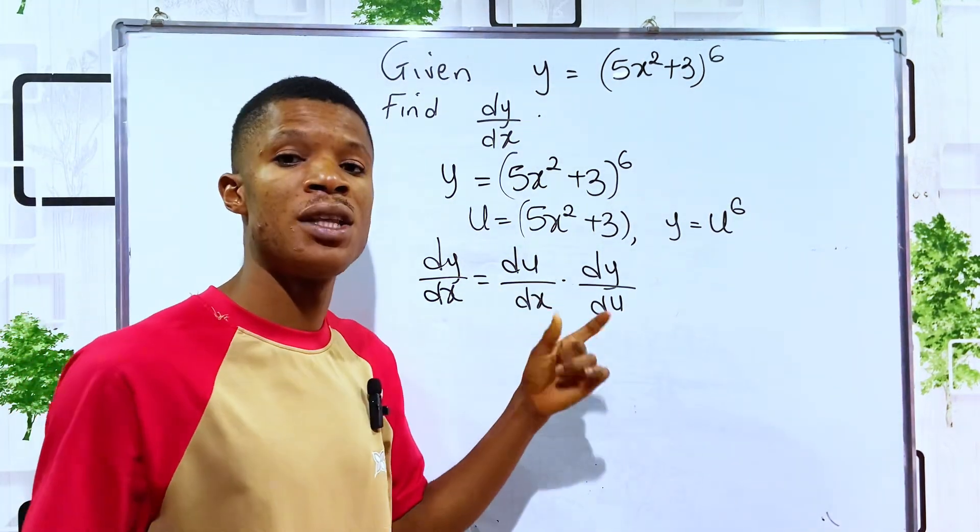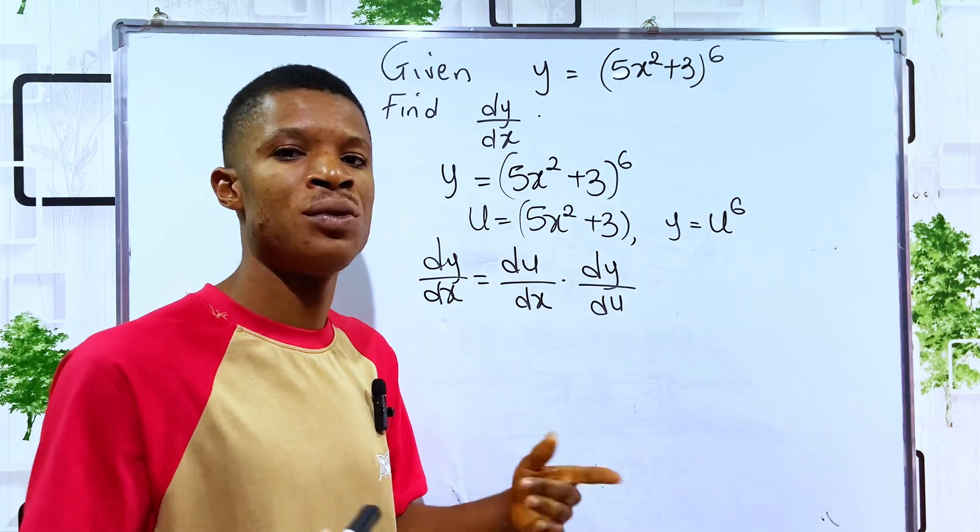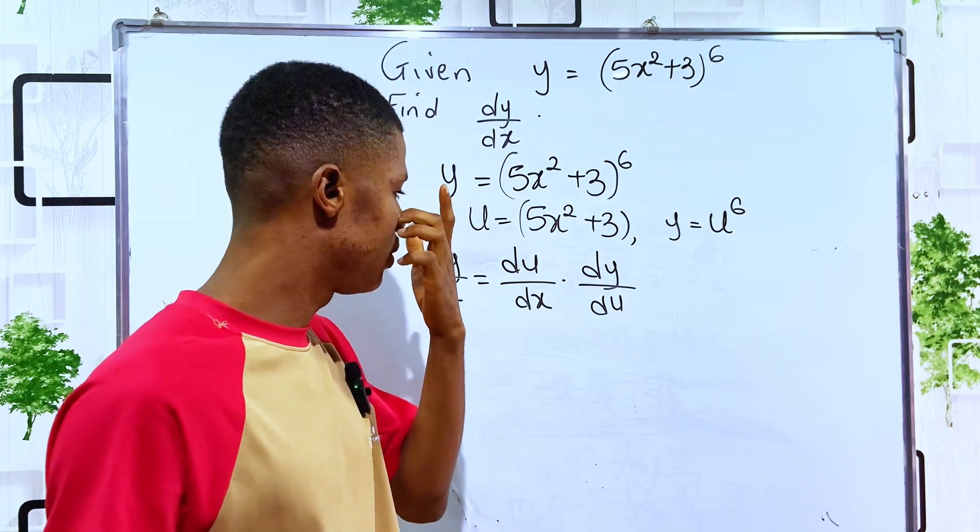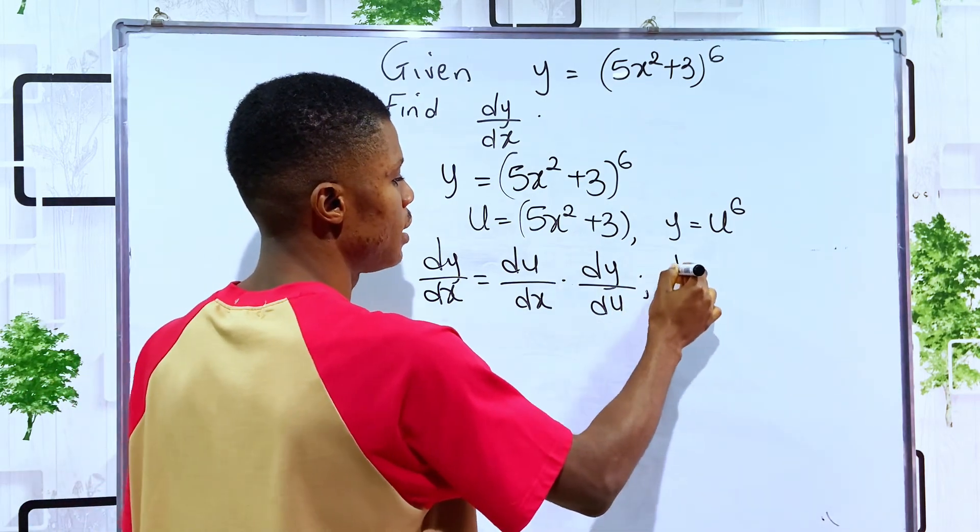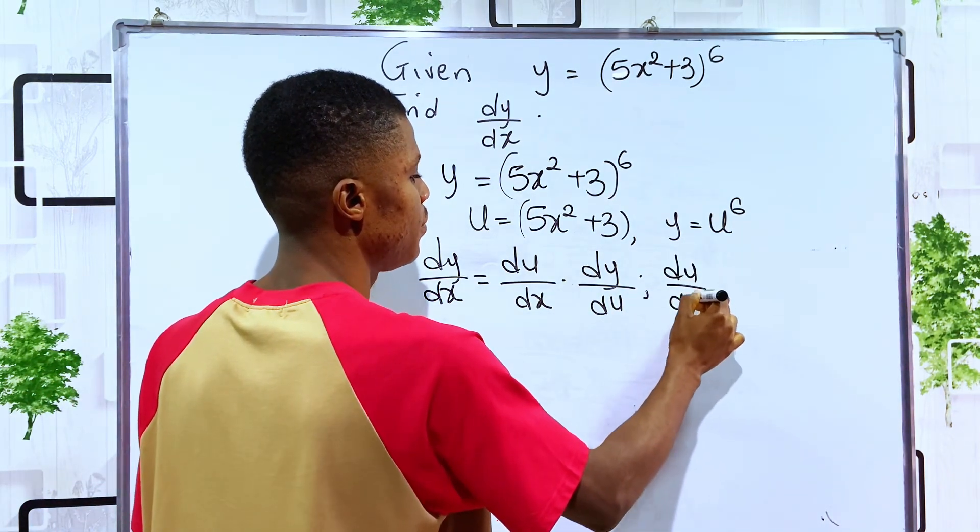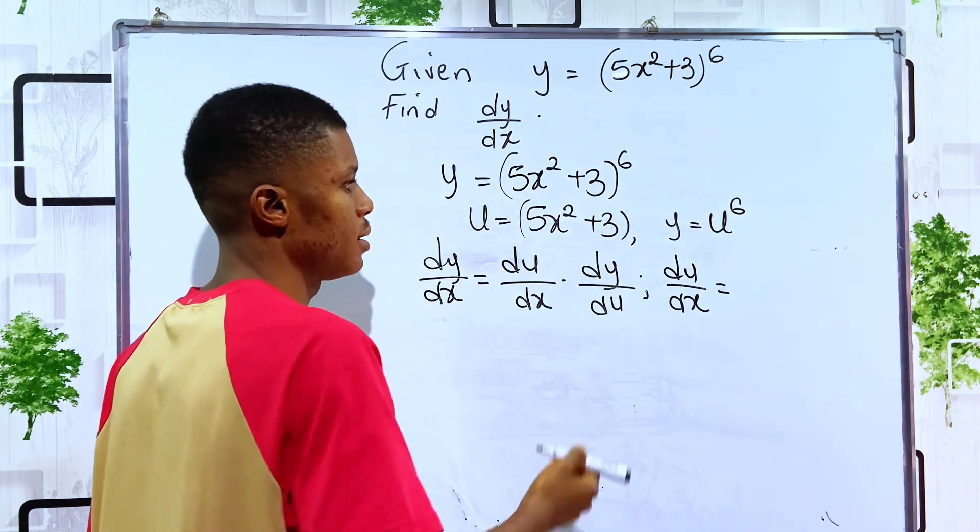So the first thing we are going to do is differentiate the u that we assigned with respect to x and differentiate the y with respect to u.